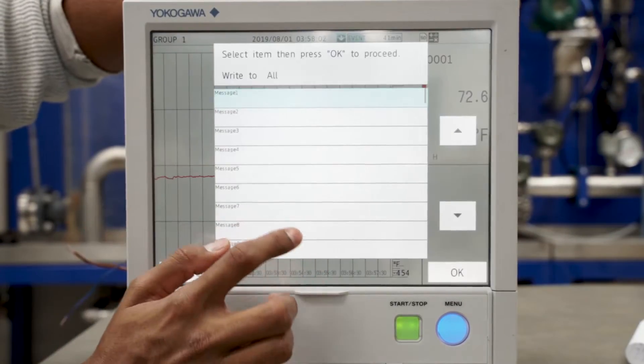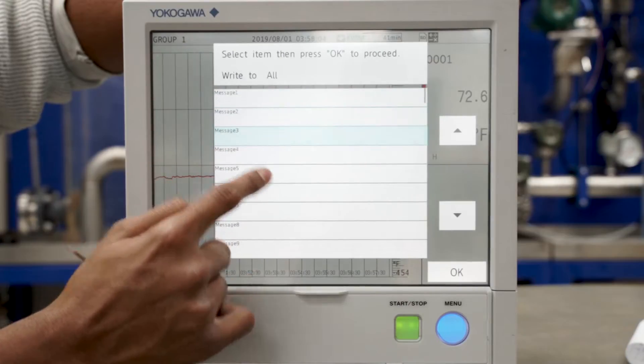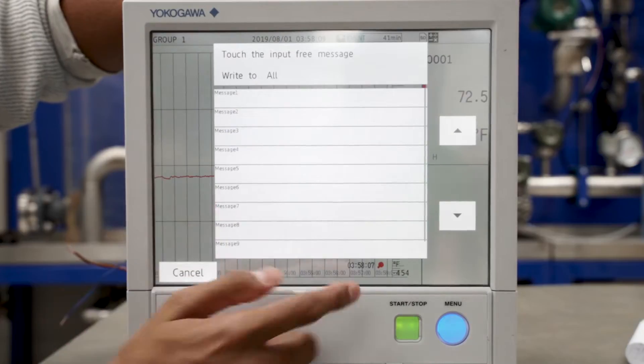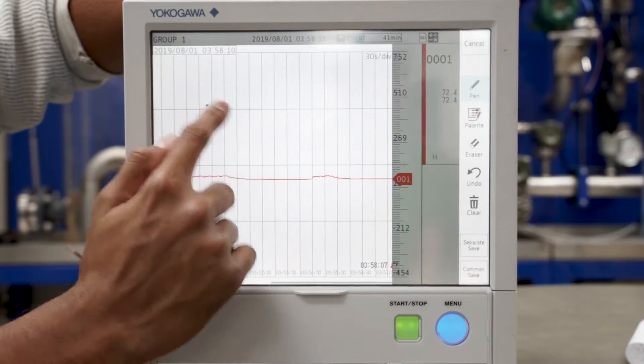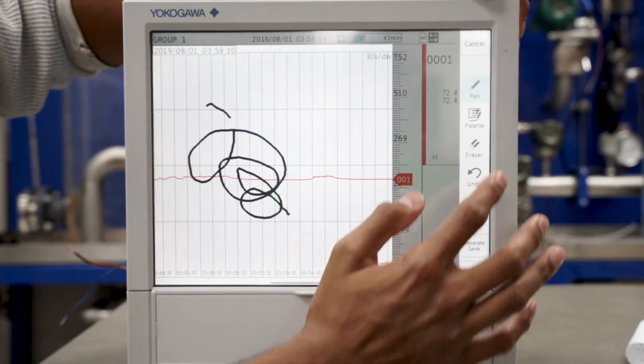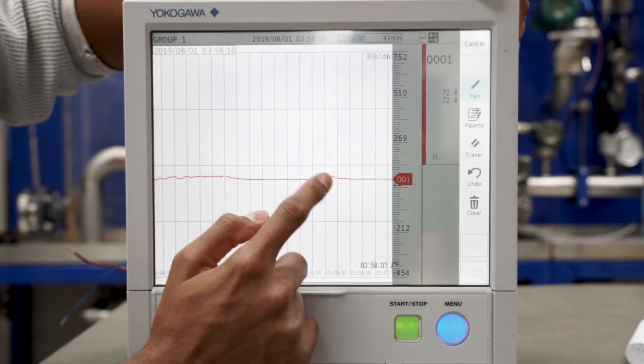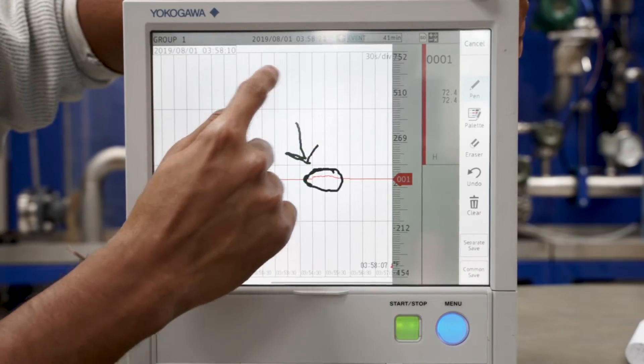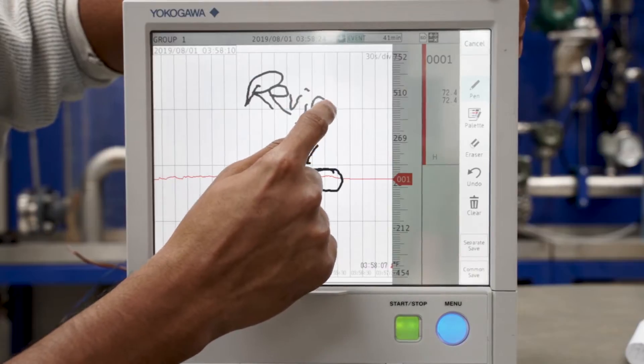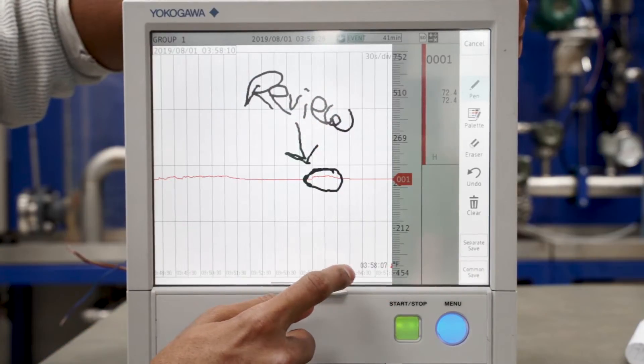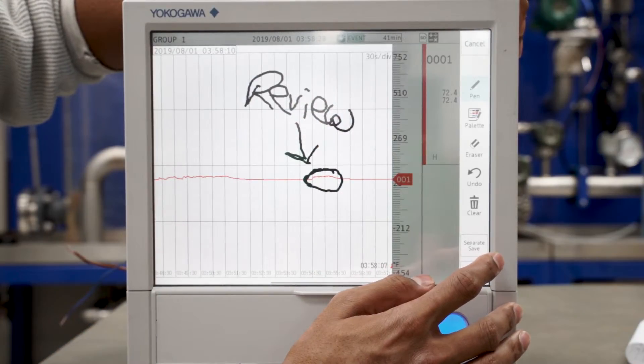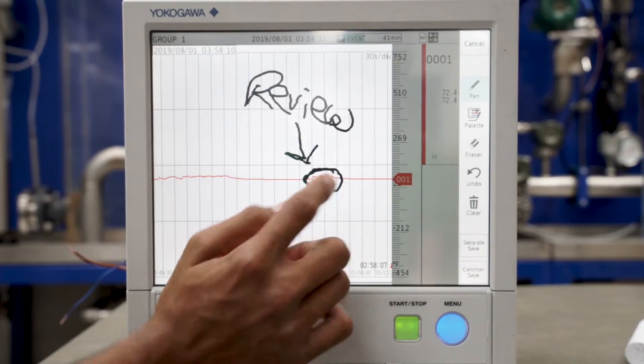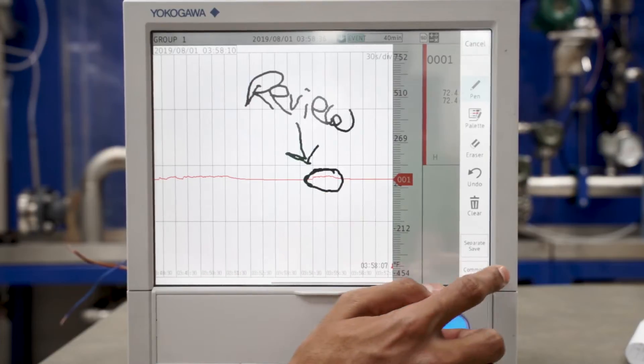Additionally, an operator can add messages directly to the display and also freehand draw messages pertaining to different messages they would like to input. Such as if I'd like to examine this particular section of data, I can simply add a note telling another operator to review, or leave it there so that when I'm reviewing this historic data I'm able to look at the section and review it in detail because I left the note.